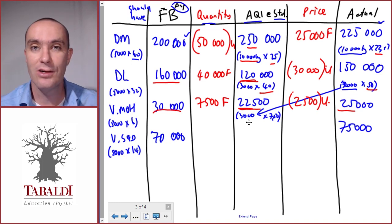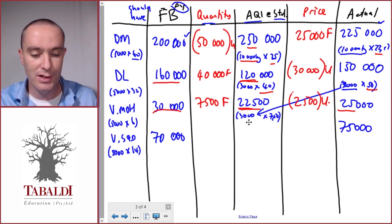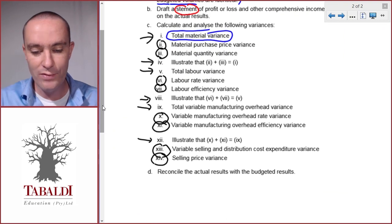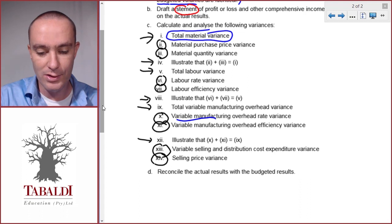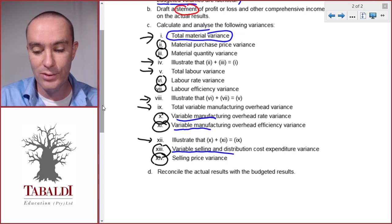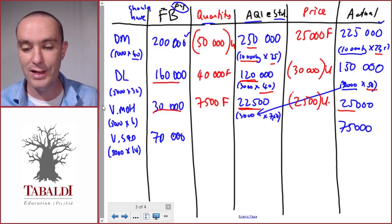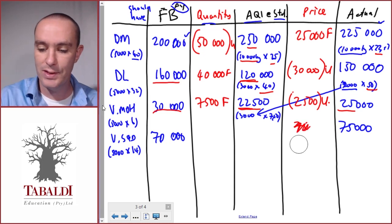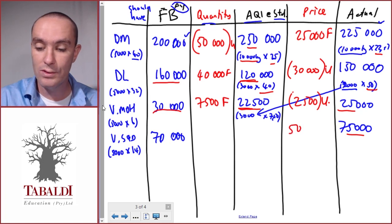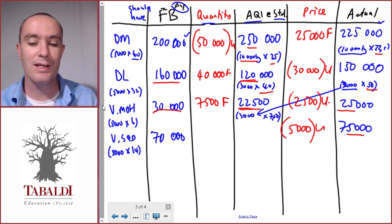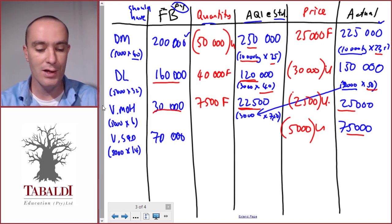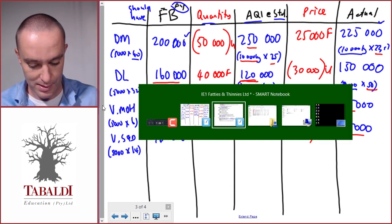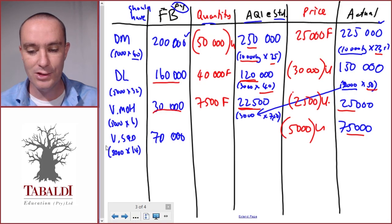For variable selling and distribution there is only one variance: the expenditure variance. It is simply what we should have paid versus what we actually paid — no quantity variance applies here. We actually paid 5,000 more than we should have, so it is an unfavorable spending variance. A spending variance is simply budgeted versus actual.